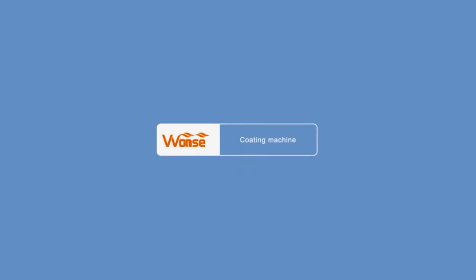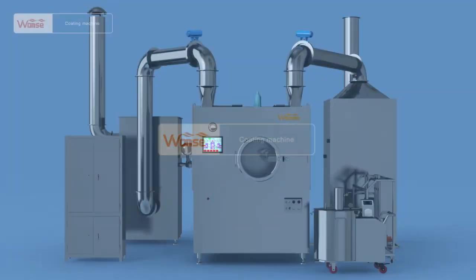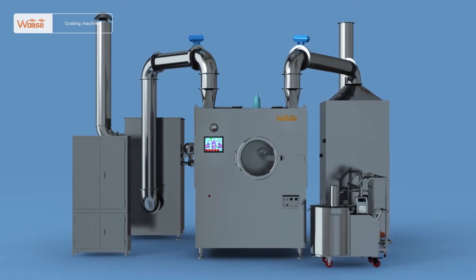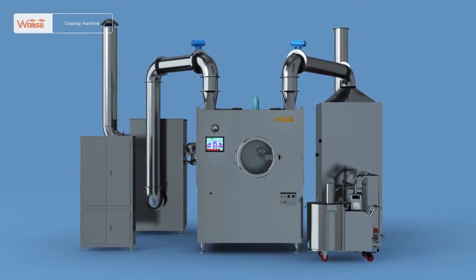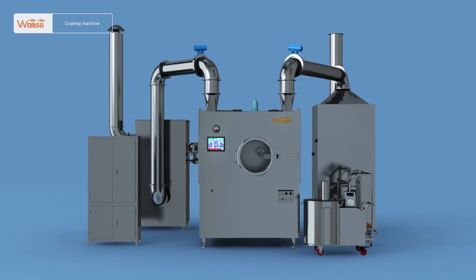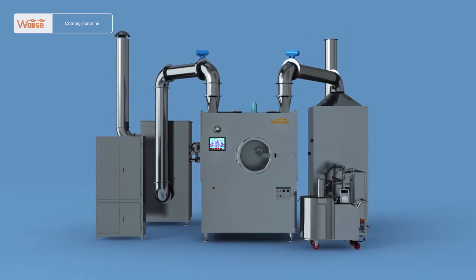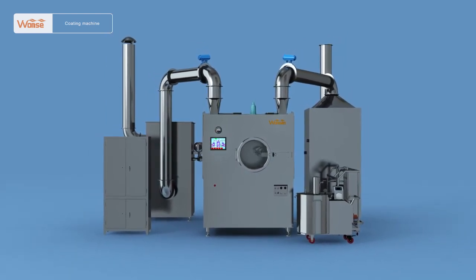The BGB high-efficiency coating machine is a special machine used for sugar coating, water-based film coating, and organic film coating of traditional Chinese medicine and Western medicine tablets and pills.